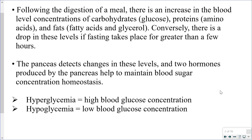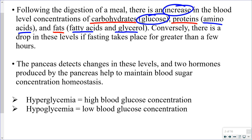After you eat a meal, macromolecules like polysaccharides, proteins, and fats must be broken down into their building blocks before absorption. For carbohydrates, that's monosaccharides — specifically glucose. Proteins break down into amino acids, and fats into fatty acids and glycerol. After eating, there's an increase in all of these in your blood. Fasting — even just a few hours — causes a drop in these same levels.